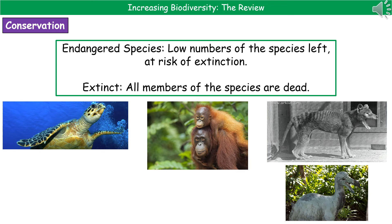Welcome to our review on increasing biodiversity. Before we get into the processes we can use to do this, we need to understand two key terms. The first one is endangered species. When we talk about an endangered species, we're talking about one where there's only very low numbers of them left, which means that they're at risk of extinction.